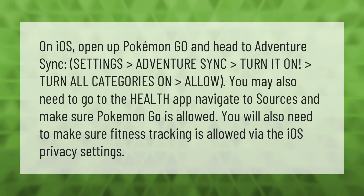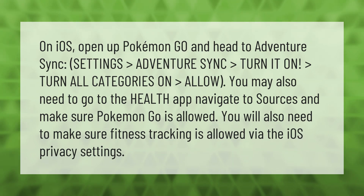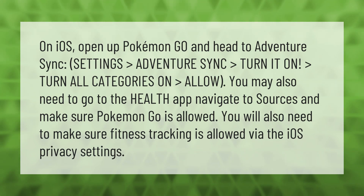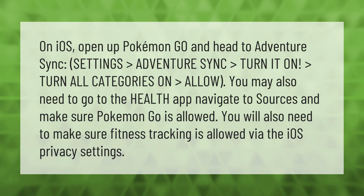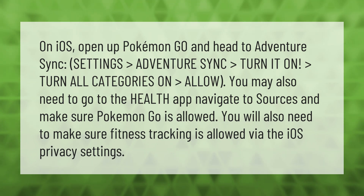On iOS, open up Pokémon GO and head to Adventure Sync settings. Go to Adventure Sync and turn it on, then turn all categories on and select Allow. You may also need to go to the Health app, navigate to Sources, and make sure Pokémon GO is allowed.